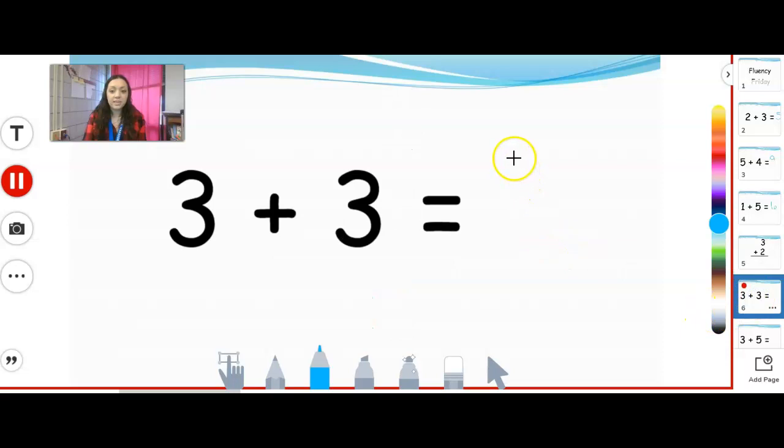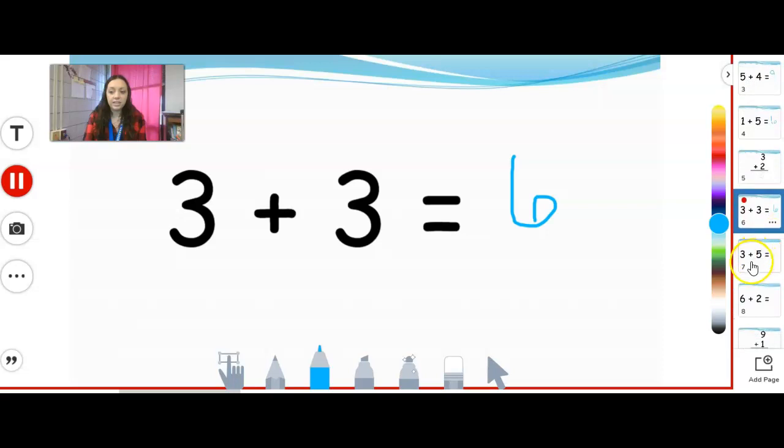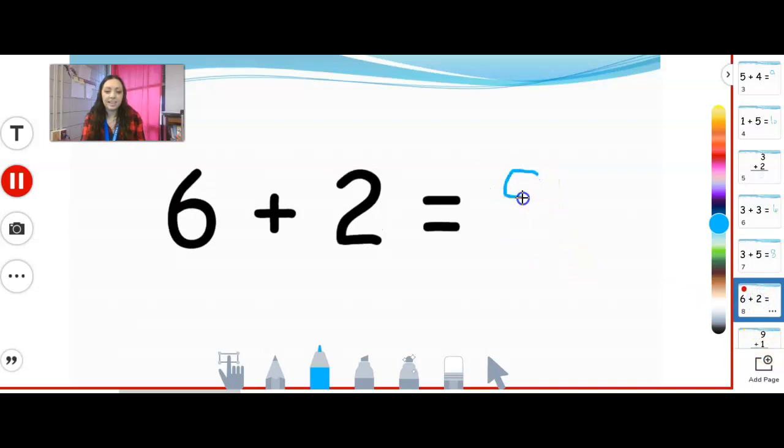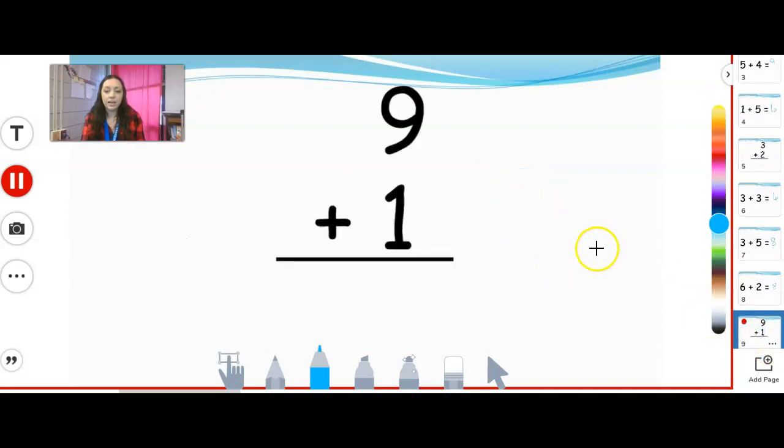Three plus three, I know that's six, so I would just write the number six. And you see, I can move my things down. And then three plus five, maybe I don't know three plus five and I have to count it. Five, six, seven, eight. So I would put eight. Six plus two, eight. So I'm just gonna go all the way down on the side. Nine plus one, 10.